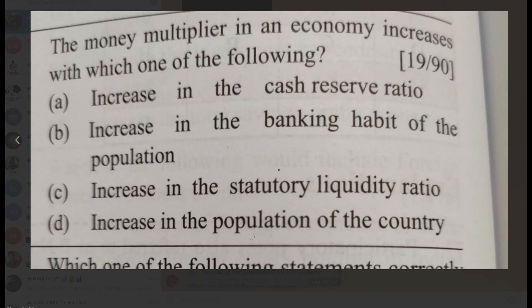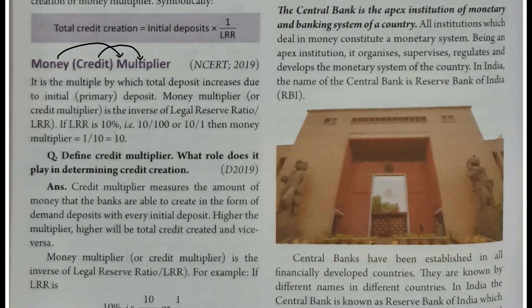Us saal ek mazedaar baat yeh thi ki saal 2019 mein UPSC ne multiplier par question poocha, aur usi saal jab 12th class ke bacchon ke CBSE boards the, unse bhi yahi poocha gaya. UPSC aur CBSE ke exam mein same question tha - alag format mein, lekin topic yahi tha - multiplier. Toh money multiplier ya credit multiplier kya hota hai? It is the multiple by which total deposit increases. Initial deposit jo hota hai bank ke paas, usko bank increase karke multiply kar deta hai - isi initial deposit ko jo ab log primary deposit bolte hain.